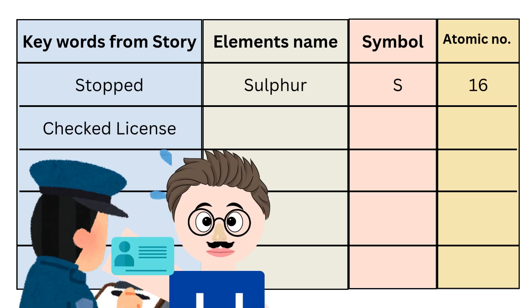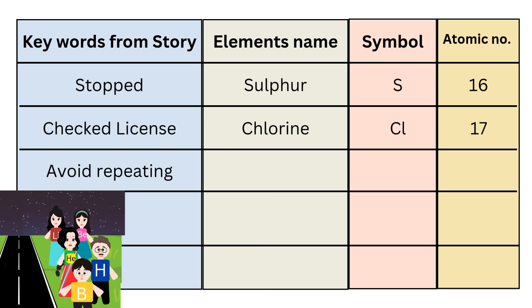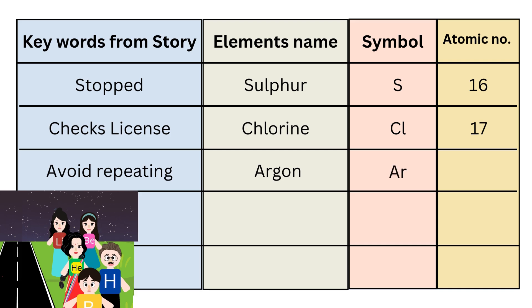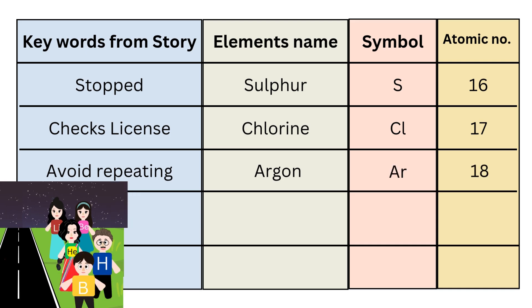Then the police officer checked their license — so 'checked license' is another key word, from which you can remember the seventeenth element name, that is Chlorine. Symbol is Cl, and atomic number is 17. Though the license was genuine, children were not sitting safely, so to teach them a lesson and avoid repeating the same mistake again, their license was seized. So another key word is 'avoid repeating', from which you can remember the eighteenth element name, that is Argon. Symbol is Ar, and atomic number is 18.